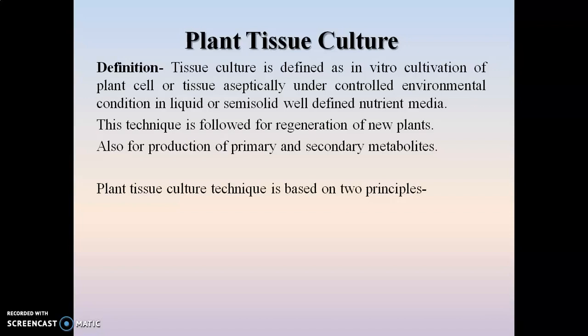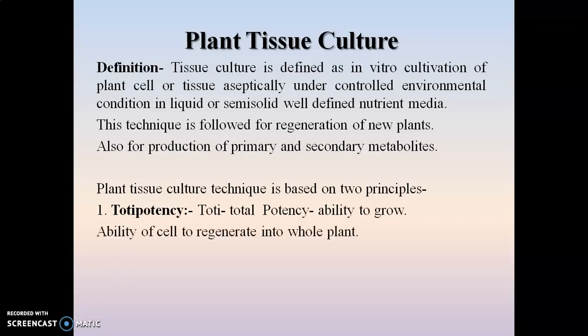There are two basic principles on which plant tissue culture is based. The first is totipotency — where 'toti' means total and 'potency' refers to the ability to grow. Totipotency means the ability of a cell to regenerate into a new whole plant.